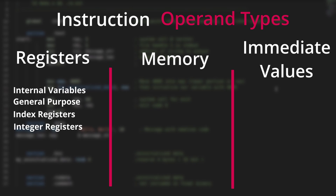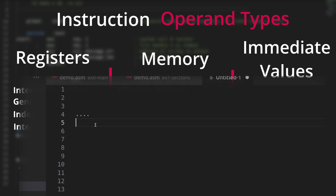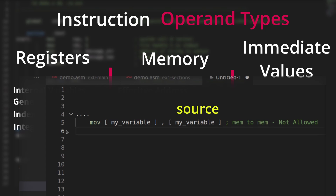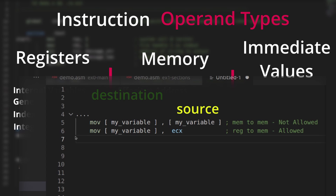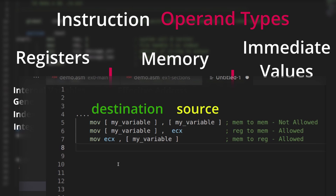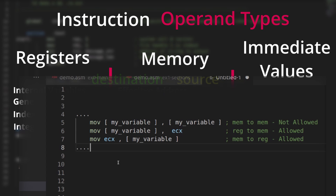Memory addressing is often called effective addressing, as the memory locations referenced are an offset to data in the BSS and data sections. When an instruction requires two or more operands, the source and destination operands will never both be memory locations — instead, there is an alternation. Using square brackets around an expression means we are reading or setting the contents of a memory location.